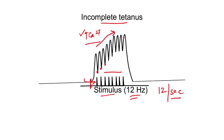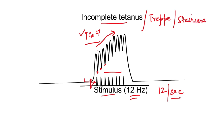This is known as incomplete tetanus, and it has other names as well — it is called treppe, or the staircase phenomenon, because the recording looks like a staircase: with each stimulus, the strength of contraction is increasing step by step.